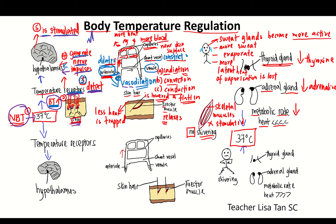This will stimulate vessel dilation of arteriole in the skin — the arteriole in the skin dilates. And the shunt vessel, which connects the arteriole to the venule, constricts and narrows. So this causes more blood to flow to the capillaries near the skin surface. More heat can be lost through three ways: radiation, convection, and conduction.